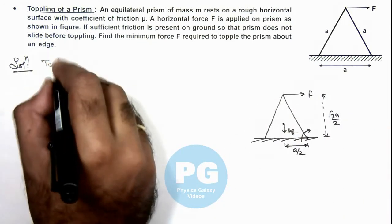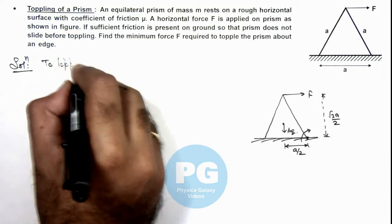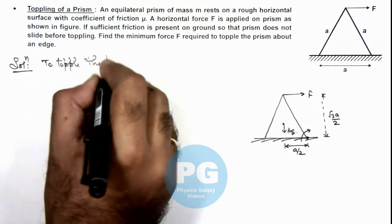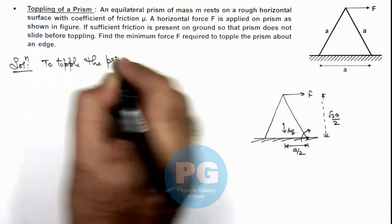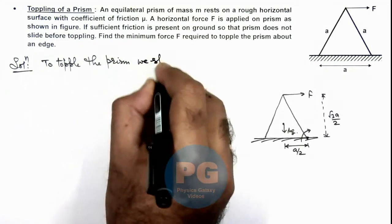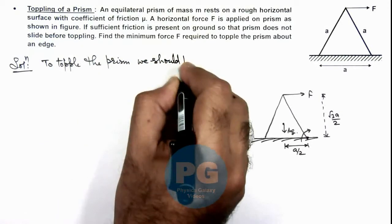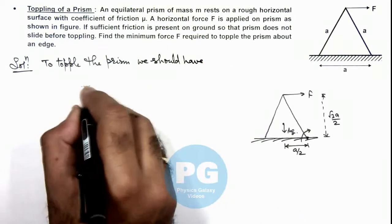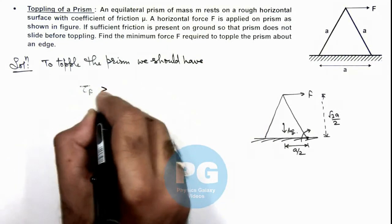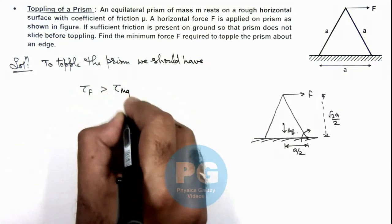Now we can write, to topple the prism we should have the torque applied by the force exceed the torque due to the weight mg.